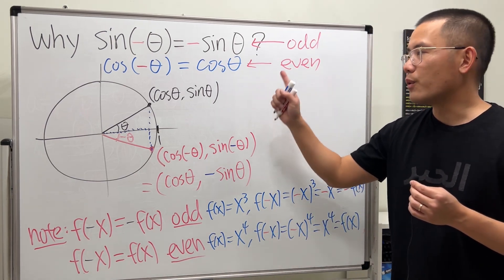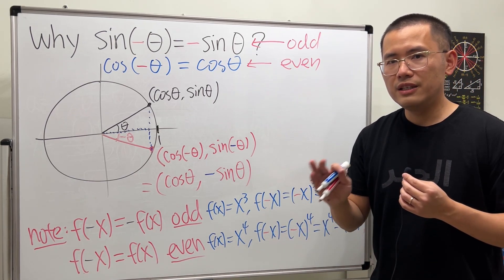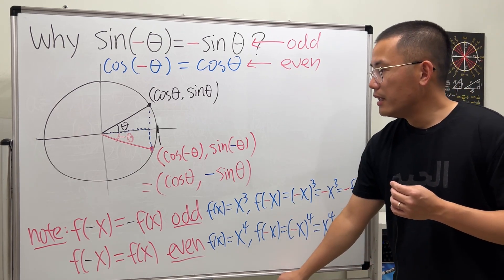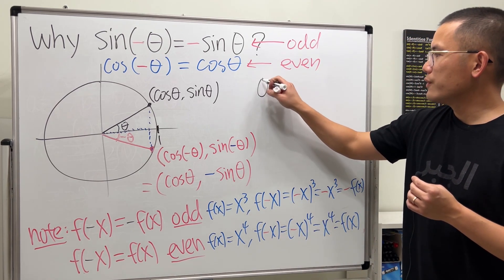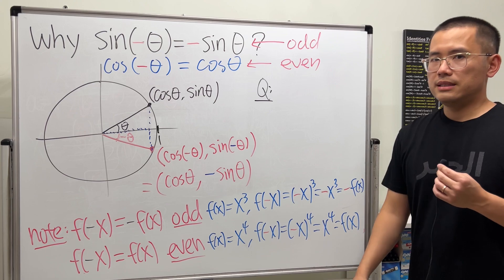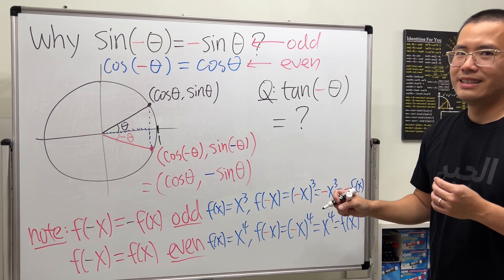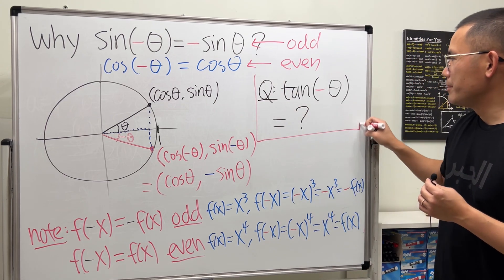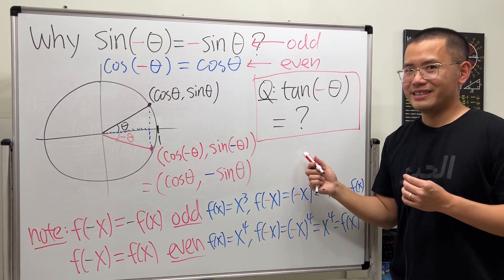That's why it's an even function. And then the power series for cosine, they all have even exponents. Alright, that said, here's a question for you guys. Is tangent even or odd? Leave a comment down below and let me know what the answer is to this.